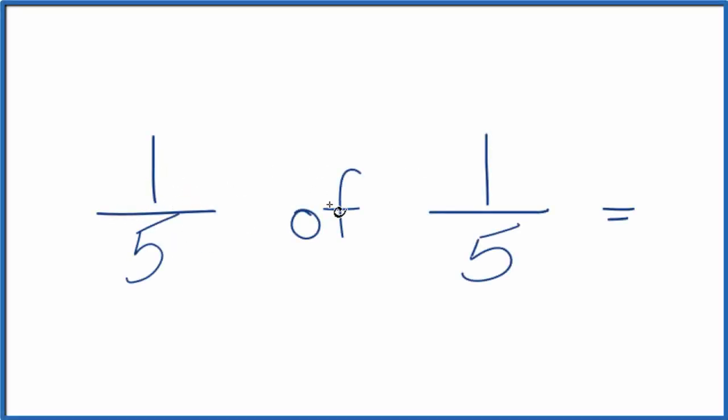When we're trying to find one-fifth of one-fifth, so this is a fraction of a fraction, the way we can do this is that of, we can think of that as a multiplication symbol.